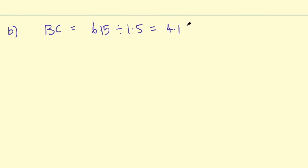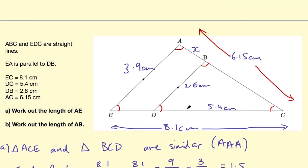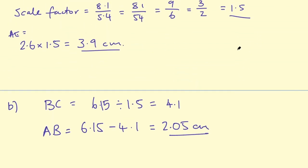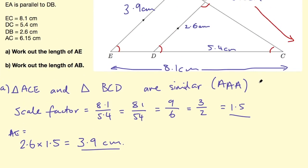Okay so I know BC equals 4.1. To find AB I need to do the long side minus the shorter side, so we've got our two answers 3.9 and 2.05 centimeters.